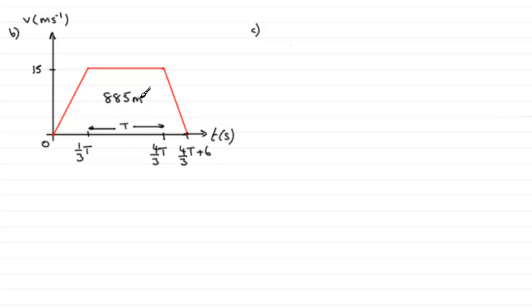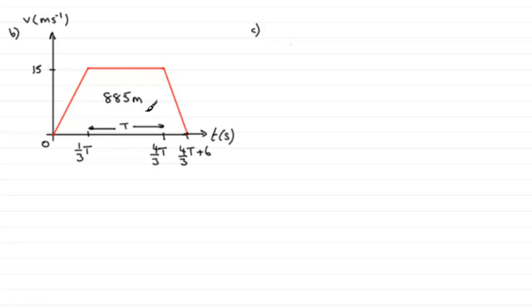The area of a trapezium, remember, is a half times the sum of the parallel sides. So it's half multiplied by this side plus this side, and then multiplied by the distance between the two parallel sides — this length here. And we'll equate that to 885 and then solve for t.